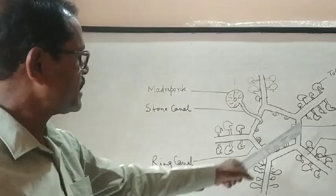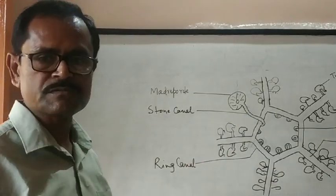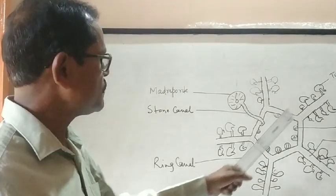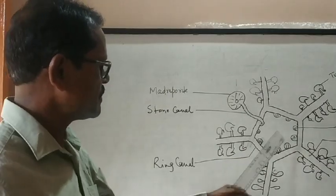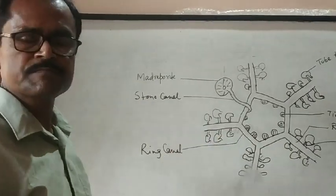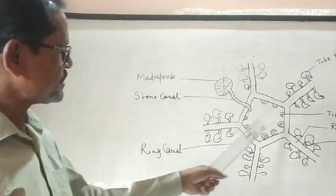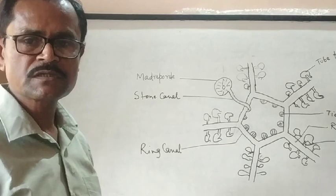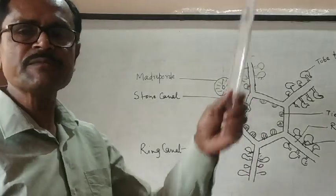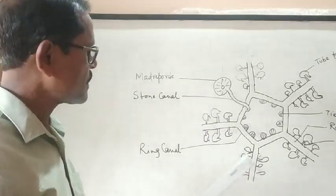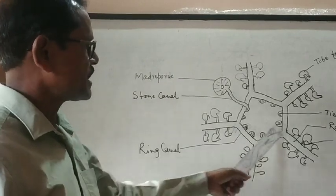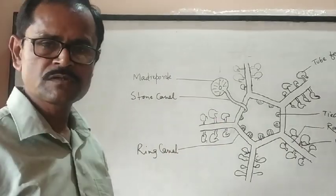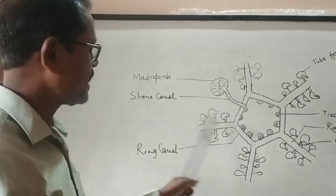The pentagonal ring type structure, the ring canal, gives out five radial canals, which proceeds through the middle zone of the arms and extends at the tip of the arms. So, there are total five radial canals, which extends in its five arms.